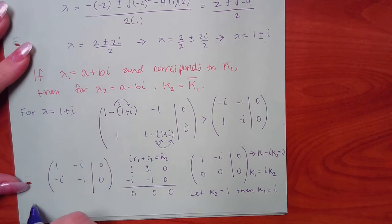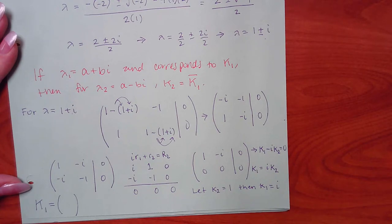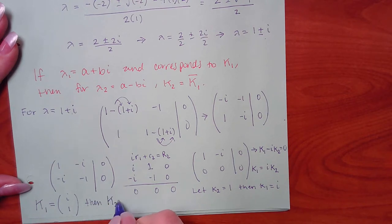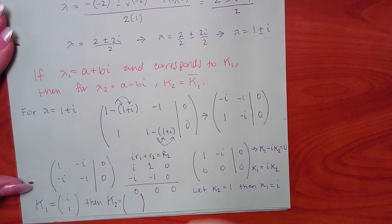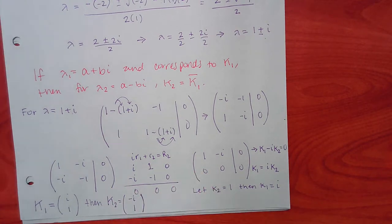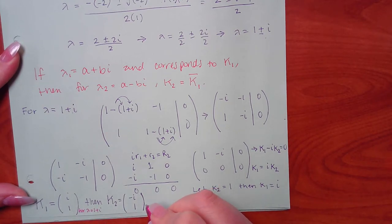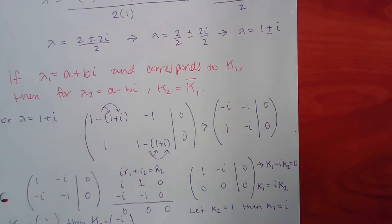If k2 equals 1, then k1 equals i times 1, which is i. So capital K1 = [i, 1]. By the conjugate rule, K2 automatically has only the imaginary part flipped: K2 = [negative i, 1]. The real part (1) stays the same.